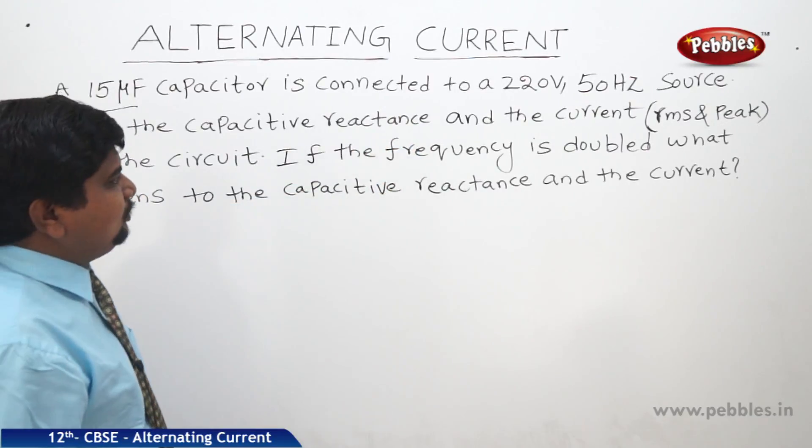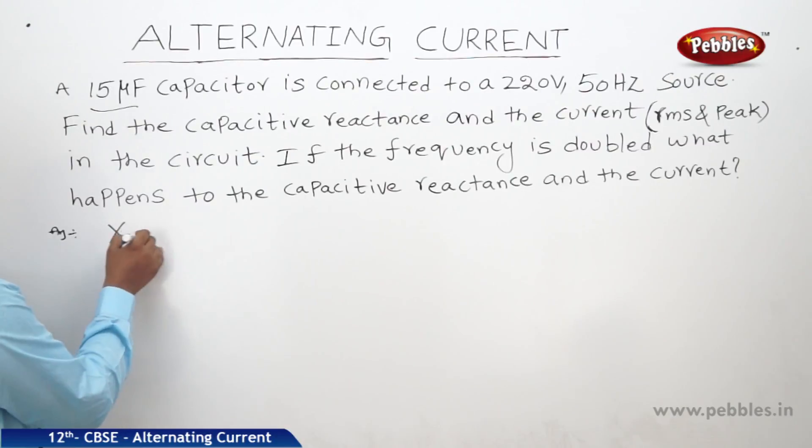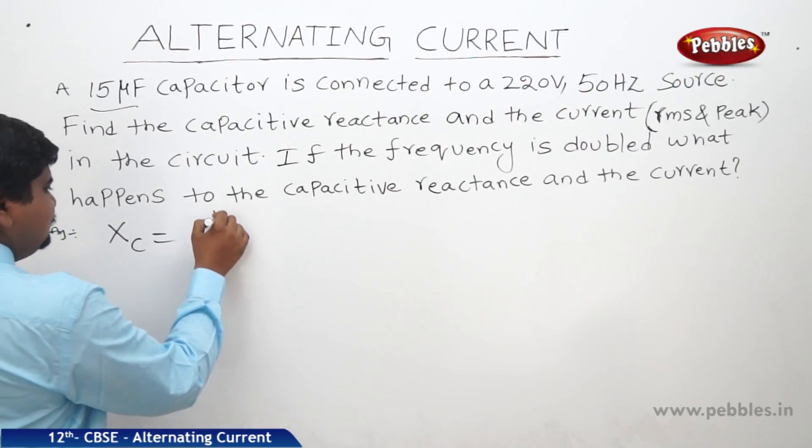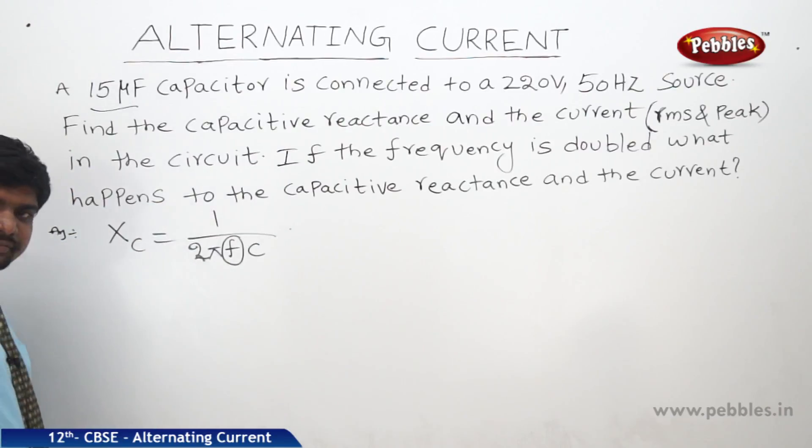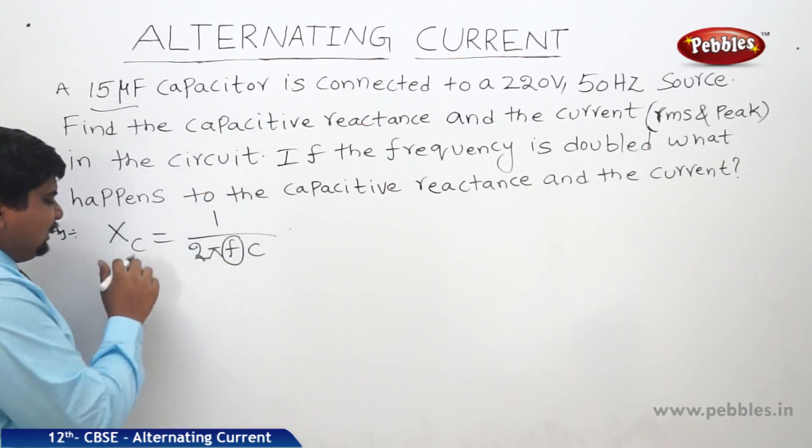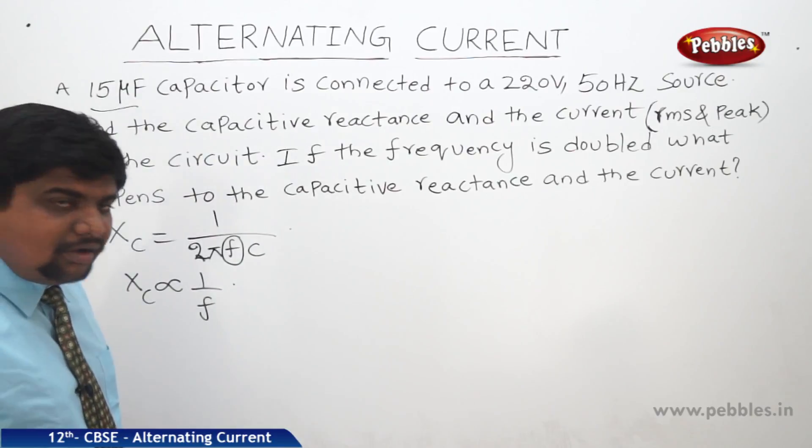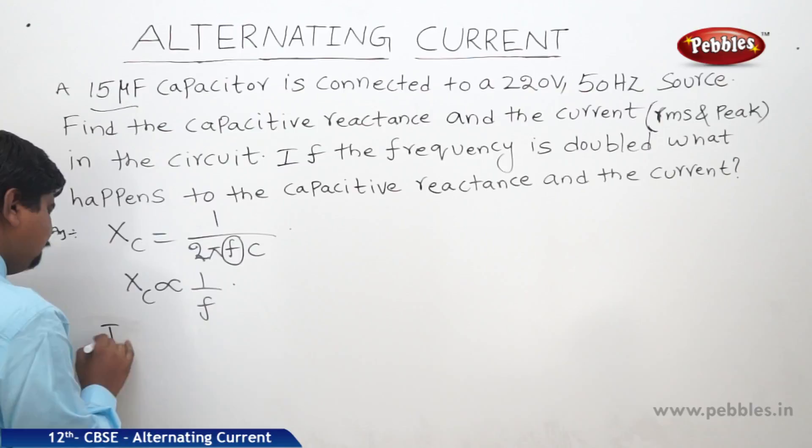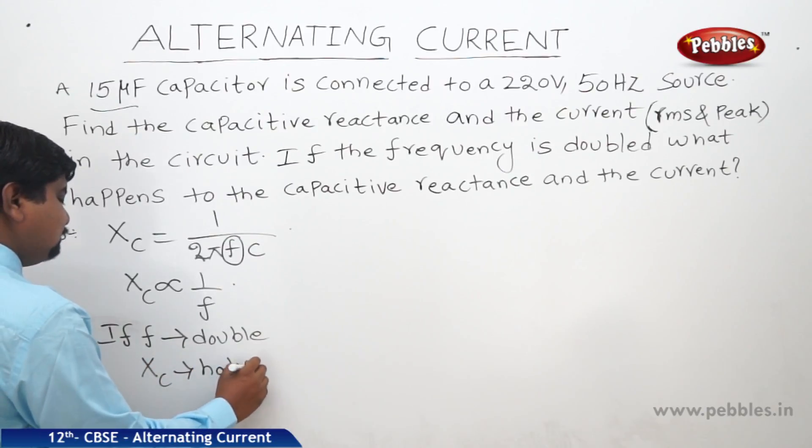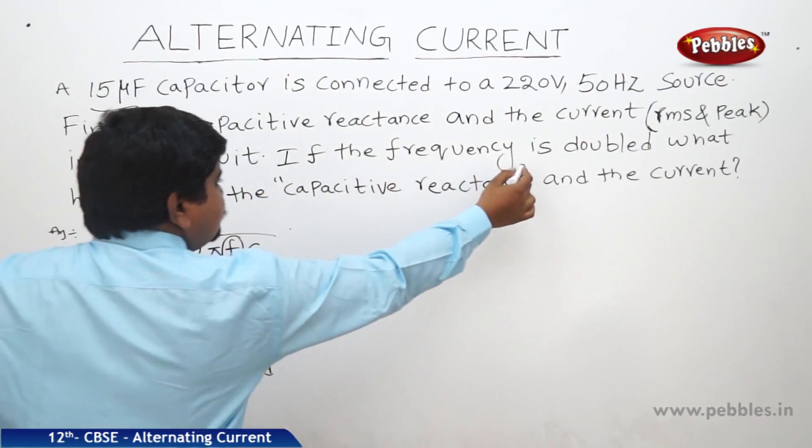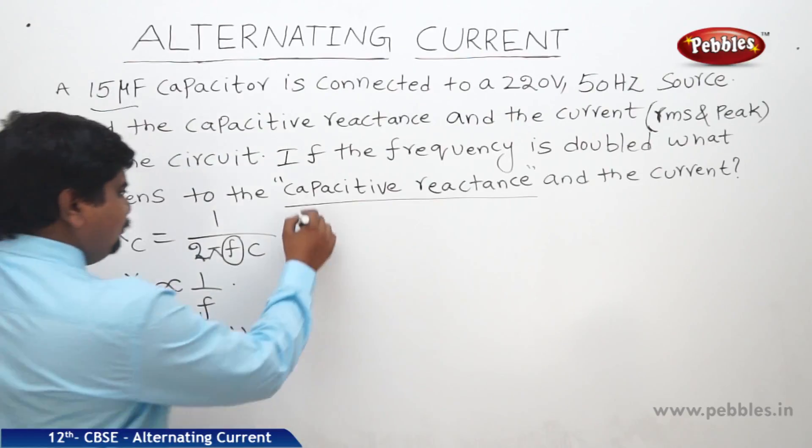But there is a condition given in the problem. If the frequency is doubled, what happens to the capacitor reactance and the current? XC is capacitor reactance, the formula is 1 by 2πFC. If frequency is doubled, means F becomes 2F. XC is inversely proportional to frequency. If F is doubled, XC will become half. So if F becomes double, capacitive reactance will become half or halved. So if frequency doubles, capacitive reactance becomes half of the original.